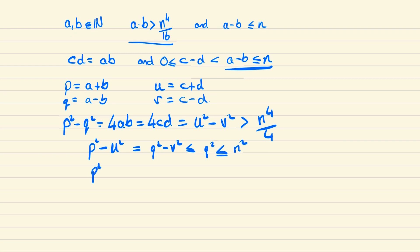Hence p squared minus u squared is smaller than n squared and from the fact that u squared minus v squared is greater than n to the 4 over 4 we know that u squared must be bigger than n to the 4 over 4 or in other words u is greater than n squared over 2.